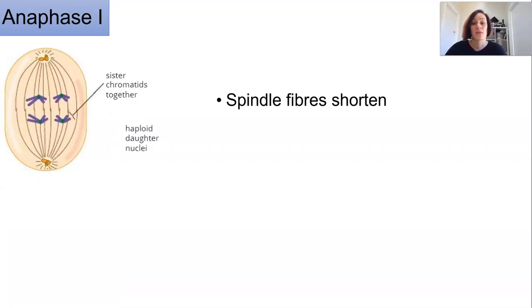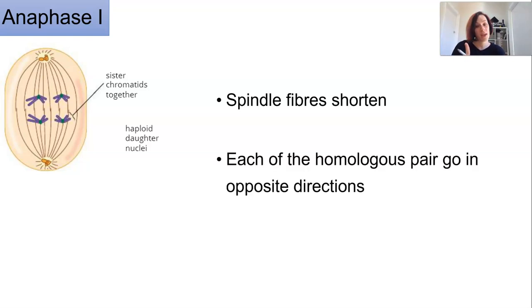Then in anaphase 1 the spindle fibres attached to the centromeres, they shorten and they draw one of each of the pairs from the bivalent in opposite directions.